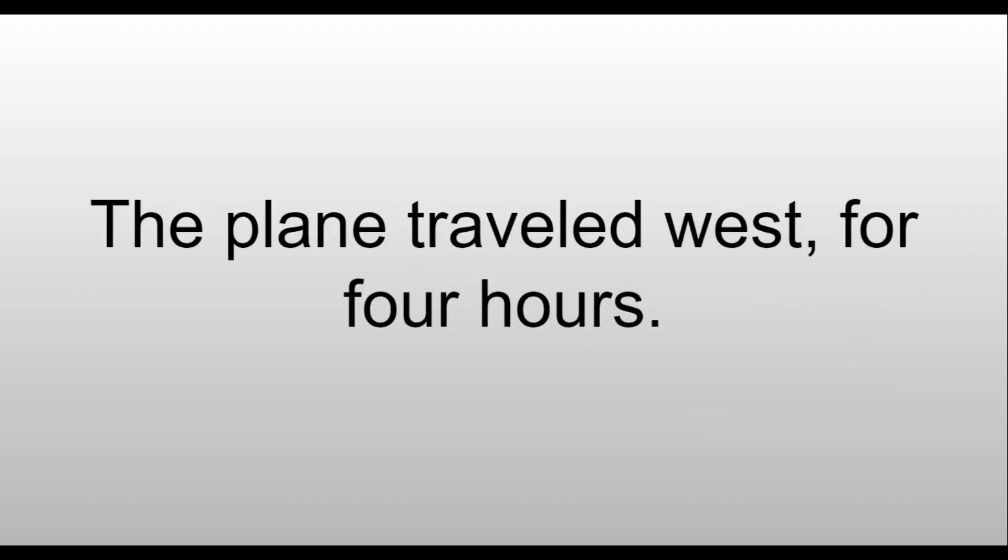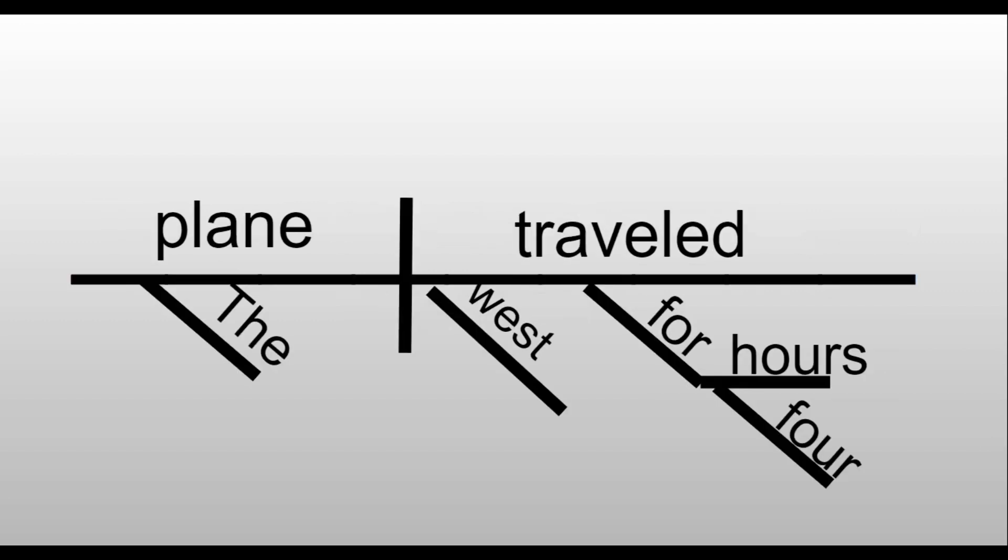The plane traveled west for four hours. Plane traveled are the only two words of the main sentence. The plane is the subject, traveled is the verb. The is describing the plane. West is our adverbial noun describing where it traveled, so it's diagrammed under traveled. For four hours is our prepositional phrase.